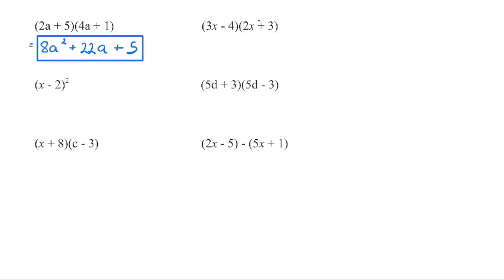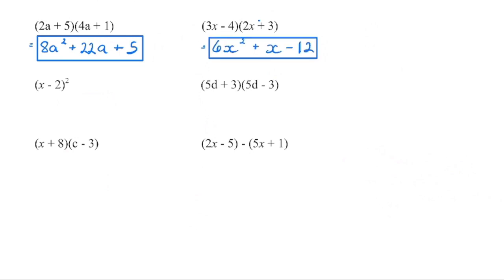Accuracy is most important, so if you need to write it out in the beginning, go for it. But as you practice, you'll be able to go straight to the simplified form. So 3x times 2x is 6x squared, and then mentally I've got 9x minus 8x is 1x, and negative 4 times 3 is negative 12. That gives us our trinomial.